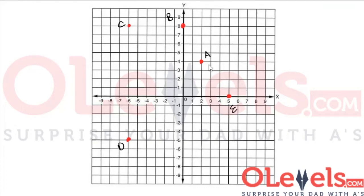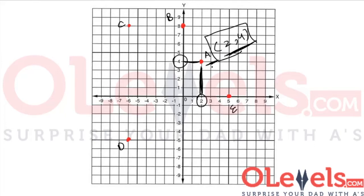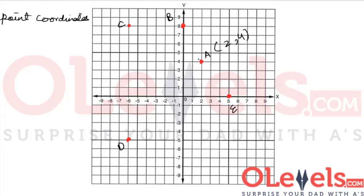I have drawn five points on the graph. Now let's try to determine the position of each of these points using the x-axis and the y-axis. Let's start with point A. The x value of point A we can find by looking at the x-axis, so the x value of this point is 2. The y value we can find by looking at the y-axis, so the y value of this point is 4. The coordinates of point A are the values of the x and y-axis that help us determine the position of point A, which are 2 and 4.